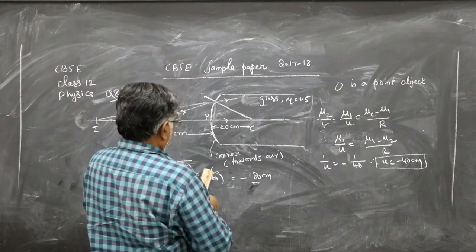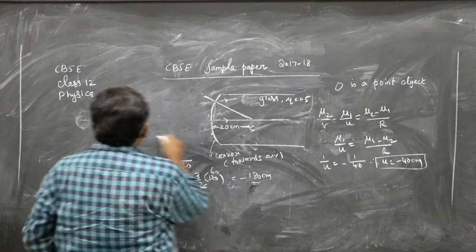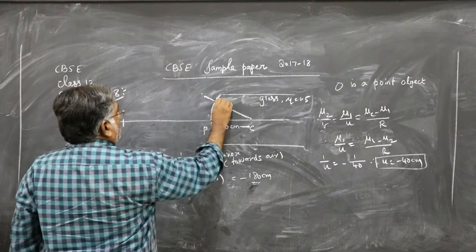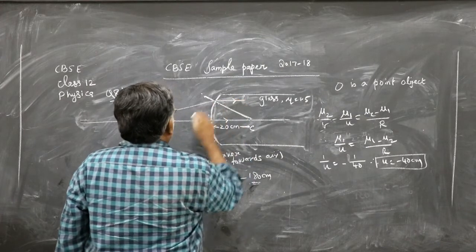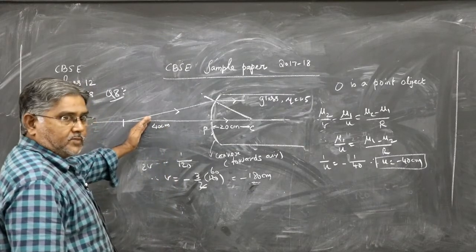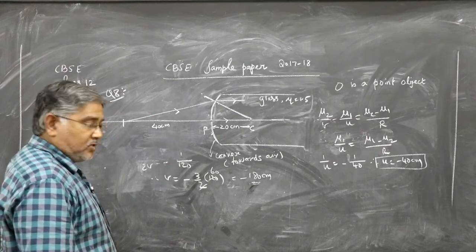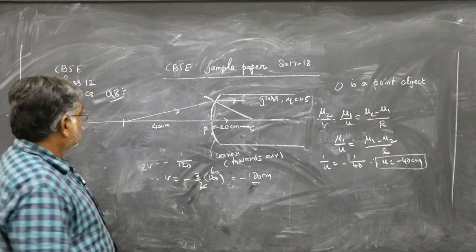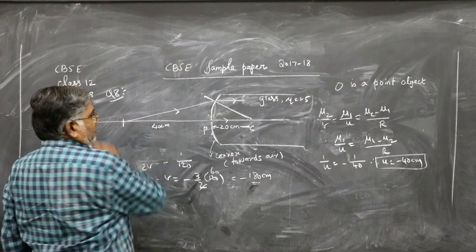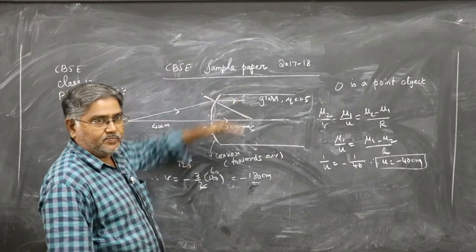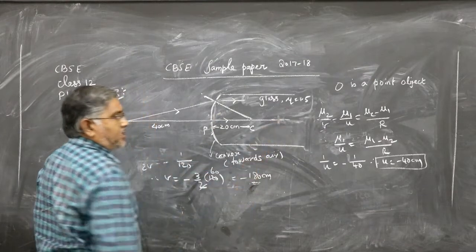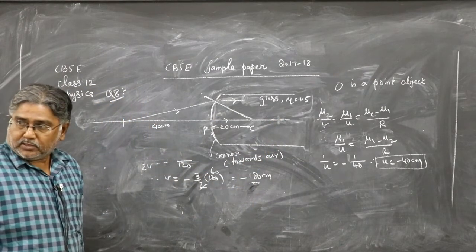So instead of 30 cm, if the object is kept at 40 cm, the refracted ray goes parallel to the axis. At 30 cm it does not go parallel — the image is virtual and on the left side. If the object is kept beyond 40 cm, the ray bends further down and a real image is formed on the right side of the surface.